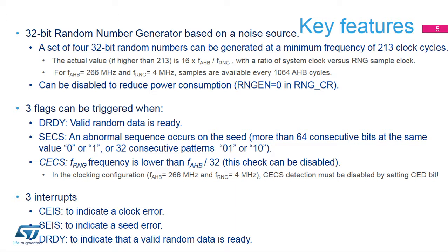The RNG peripheral is based on continuous analog noise that provides a random 32-bit value, which will be explained in detail later on. The RNG is able to generate four 32-bit random numbers at a minimum frequency of 213 system clock cycles.